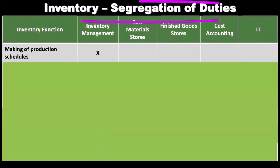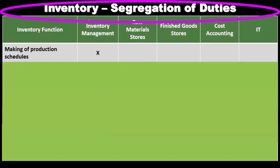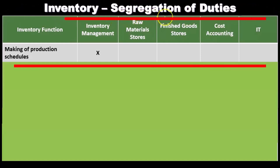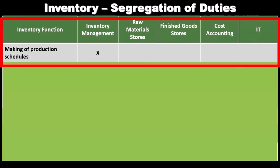Here we have our segregation of duties. We're going to present this in a table format. We have the function on one side, and then the areas involved: inventory management, raw materials, finished goods, storage, cost accounting, and IT. These are different areas that will be doing different things.